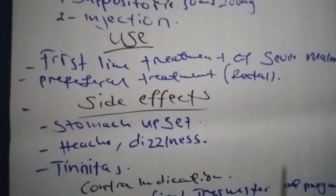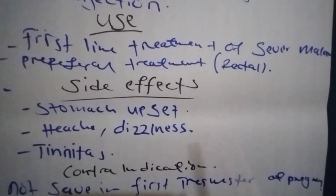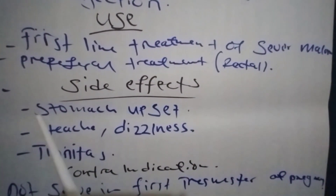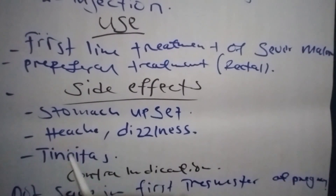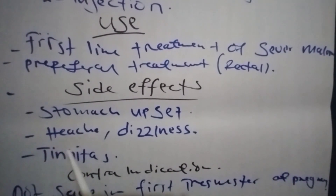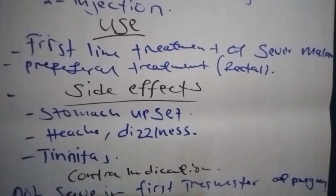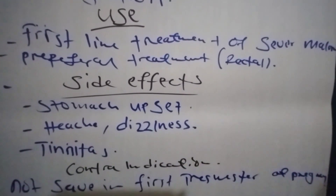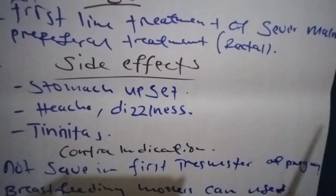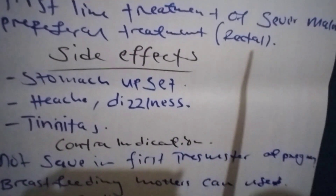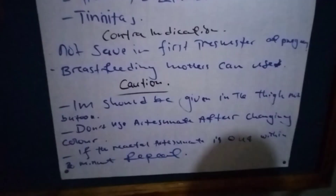What are the side effects of Artesunate? All drugs have side effects. It can give you stomach upset, diarrhea, headache, dizziness, and tinnitus. But you will not necessarily experience all of them — you may experience just one or two, or some people do not experience any at all.